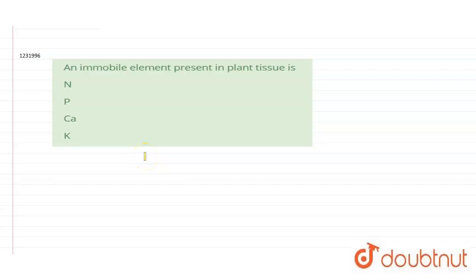Hello everyone, let's start the question. The question says that an immobile element present in plant tissue is. The options we have are nitrogen, phosphorus, calcium, and potassium.